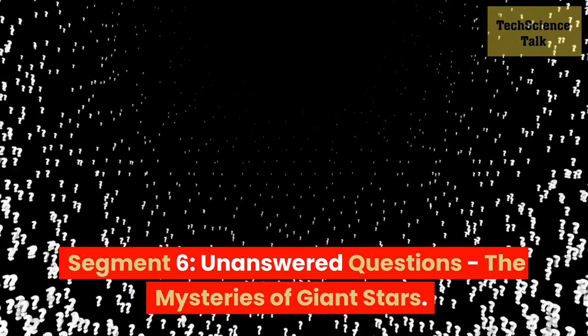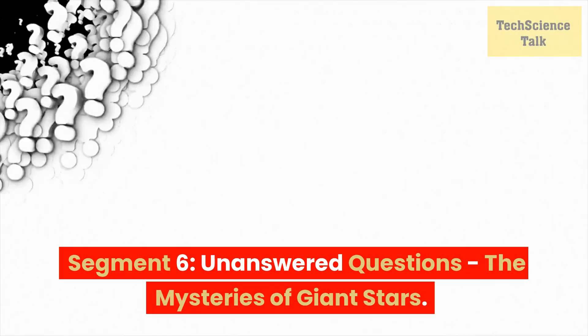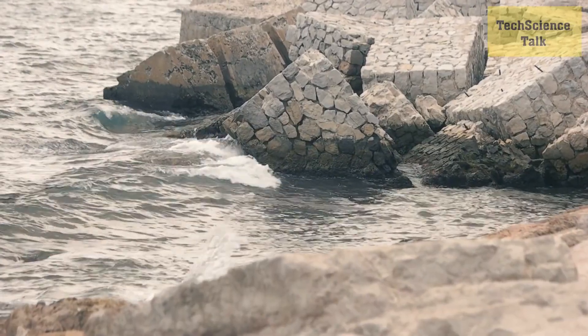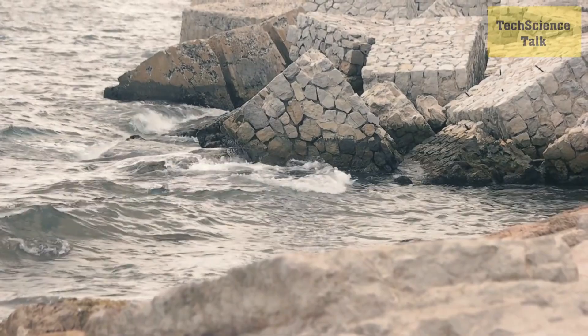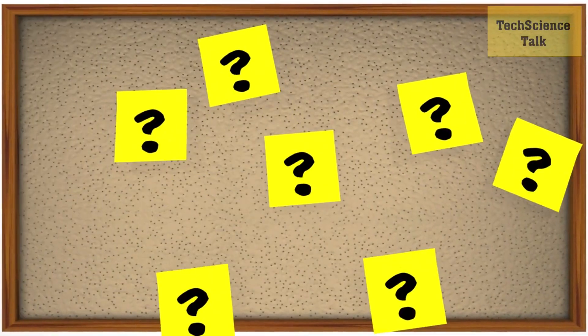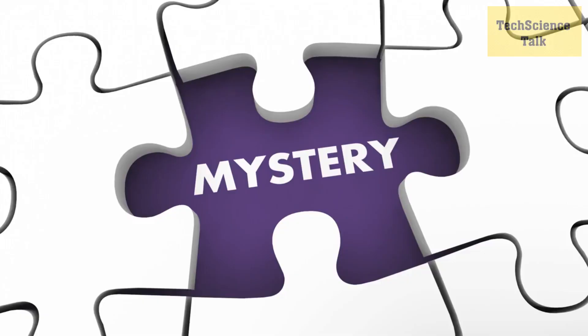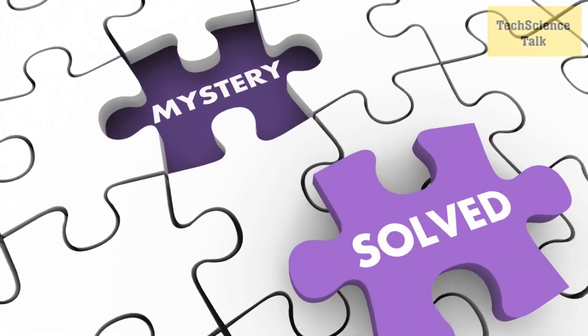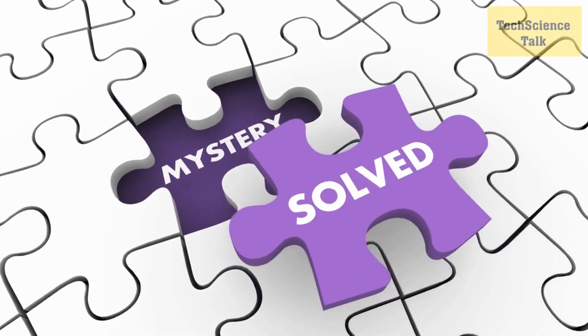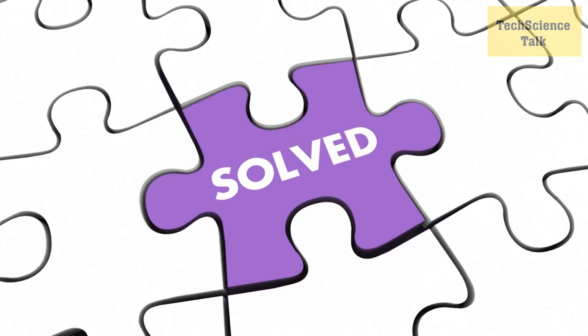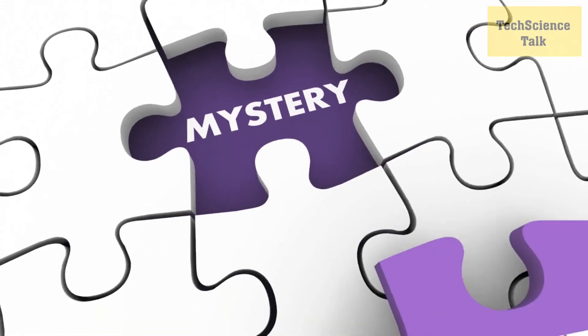Segment 6: Unanswered Questions - The Mysteries of Giant Stars. While UY Scuti holds the title of the largest known star, many mysteries still surround giant stars like it. In this segment, we delve into the unanswered questions that continue to intrigue scientists and astronomers. What factors determine the size and mass of these massive stars? How do they form and evolve to reach such colossal proportions? The study of giant stars pushes the boundaries of our understanding and challenges existing theories of stellar evolution.